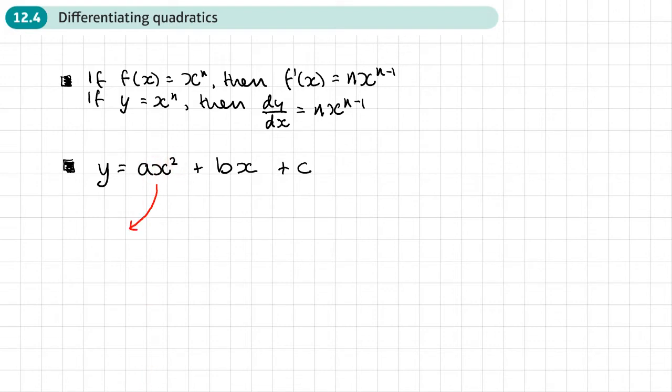We know that we're going to multiply by the power. So we will have 2ax and then we take one away from the power. So that's like power one. So we can just write as x.